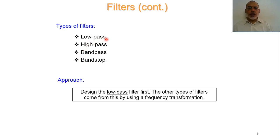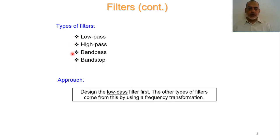In our design, we usually design the low-pass filters first, and after designing the low-pass filter we convert our design to other types according to the required specifications. So the design is usually based on the low-pass filter, and other types of filters are obtained from this by using what we call frequency transformation. Our basic theory is therefore based only on the low-pass filter.